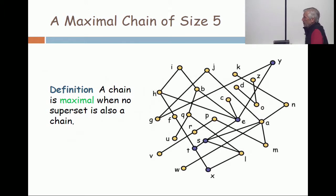What about a maximal chain of size 4? U-Q-B-I. Yep, you see that one? U-Q-B-I is a maximal chain of size 4.